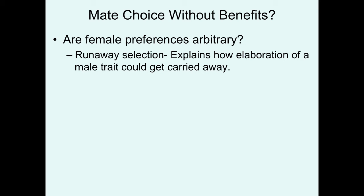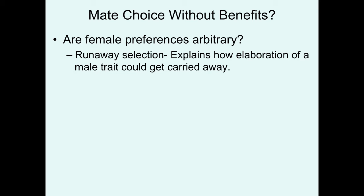There is the potential that females could choose among potential mates for truly arbitrary reasons. Could female preference be simply an arbitrary decision? That is a possibility under a model of sexual selection called runaway selection. This explains how a trait could start off modest but evolve to be extremely elaborate through a process of positive reinforcement that just gets carried away.